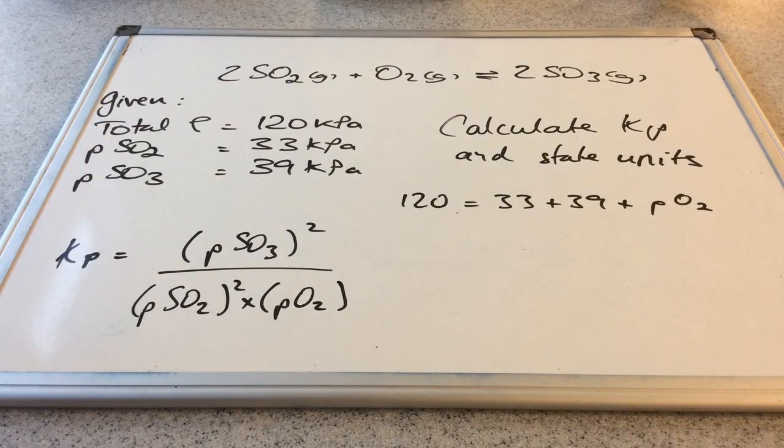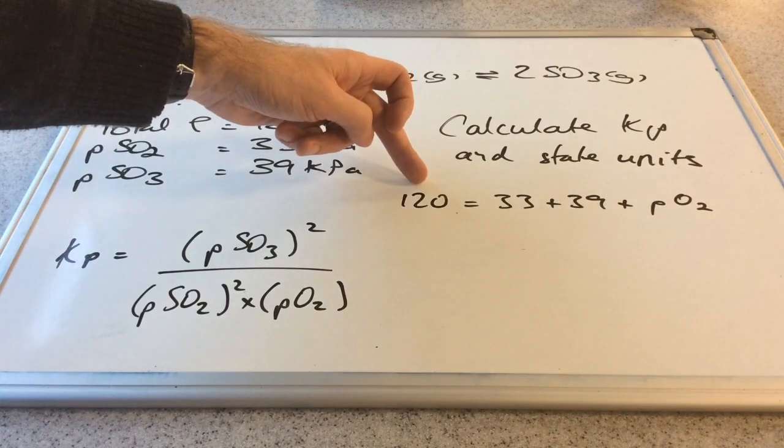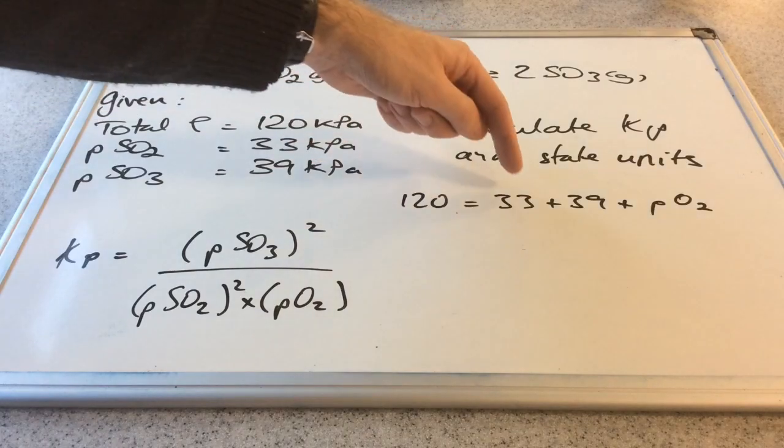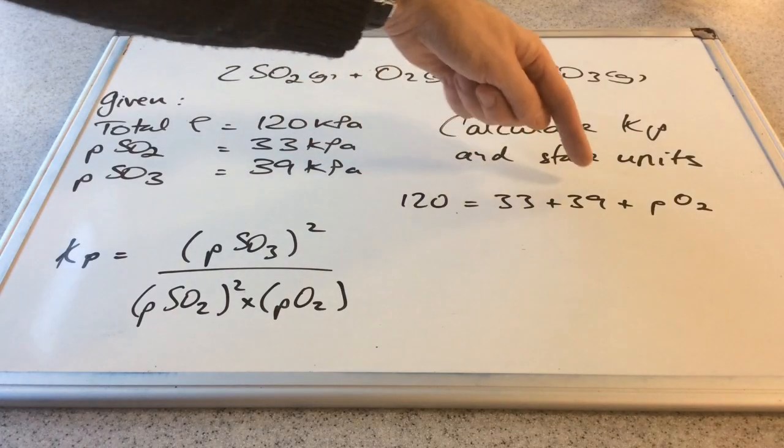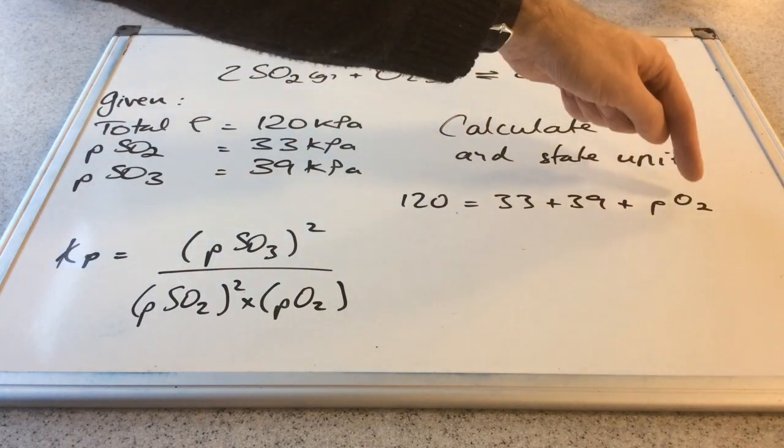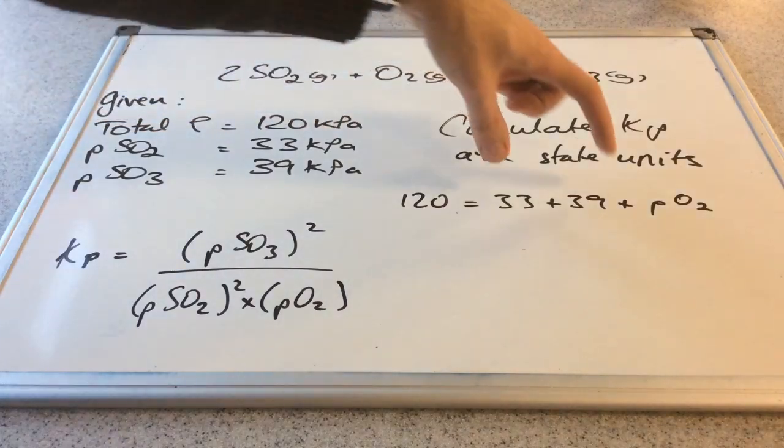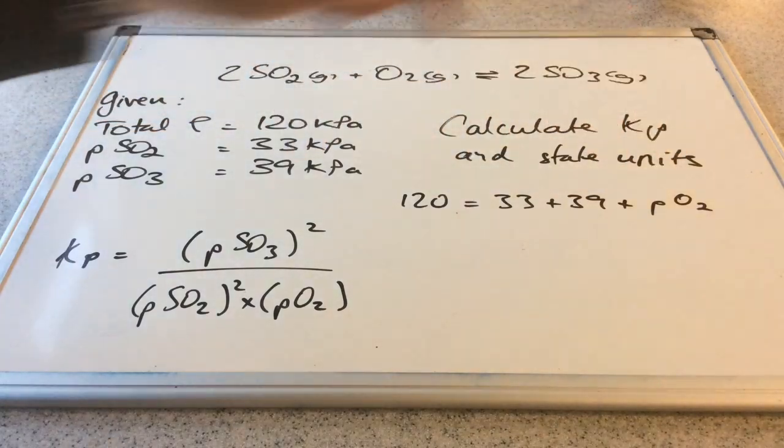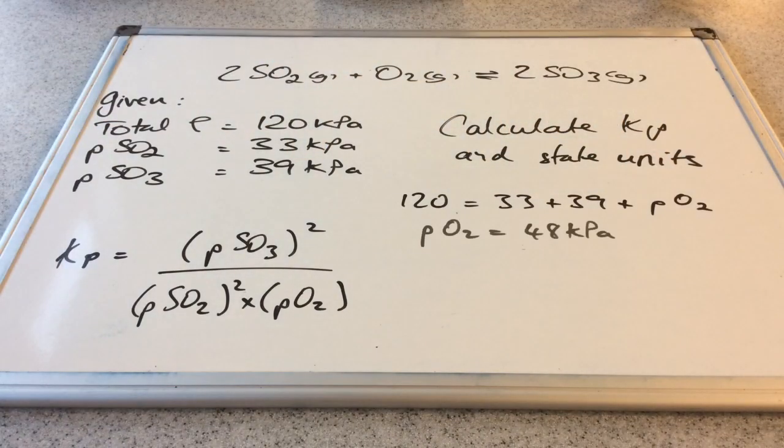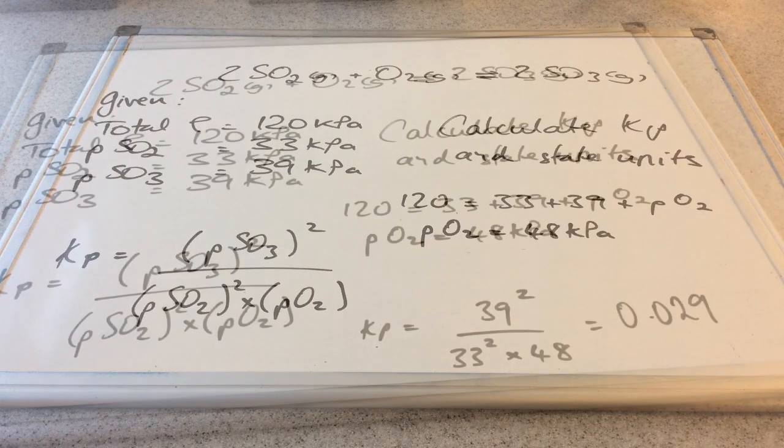So that total pressure of 120 kilopascals is equal to the 33 kilopascals plus the 39 plus the partial pressure of the oxygen. So if we get them over there, we can calculate partial pressure for oxygen. And that comes out at 48 kilopascals.